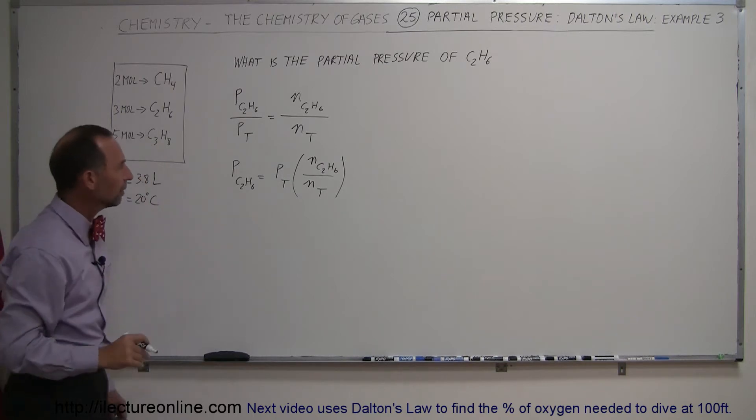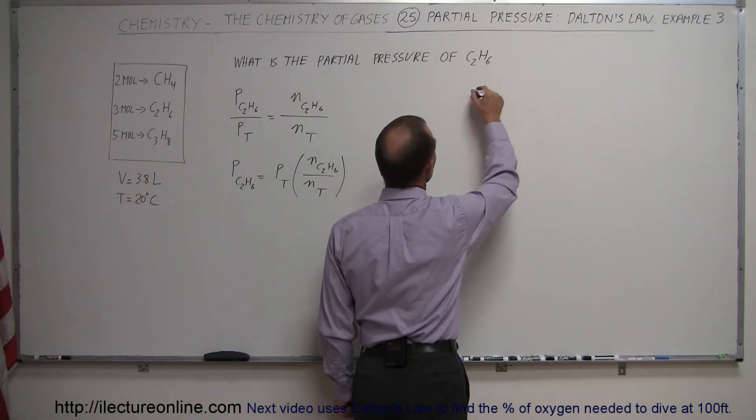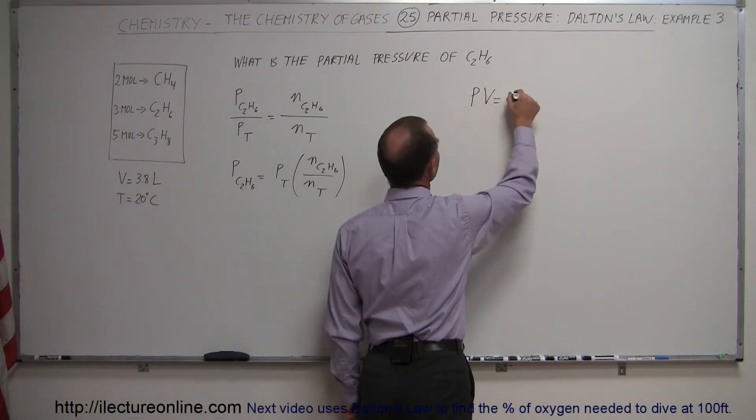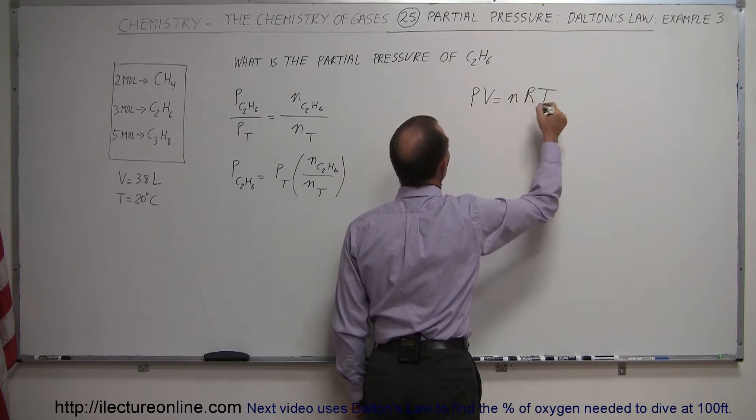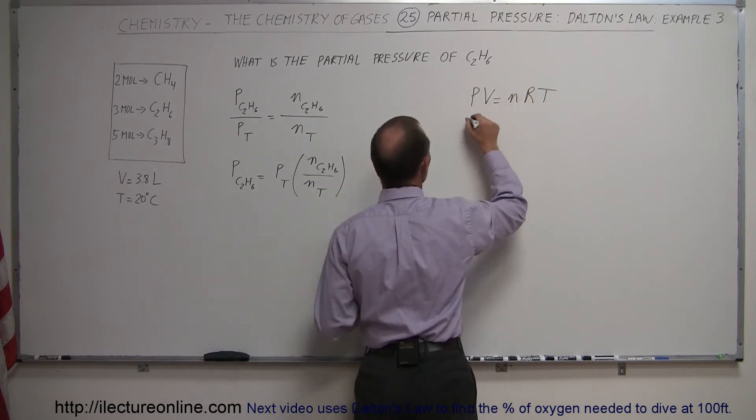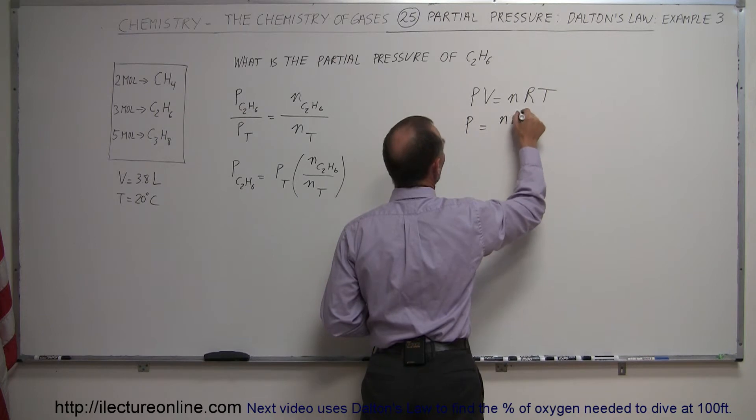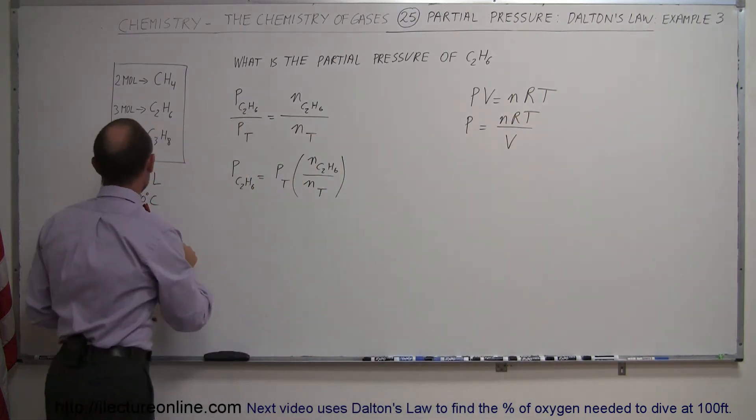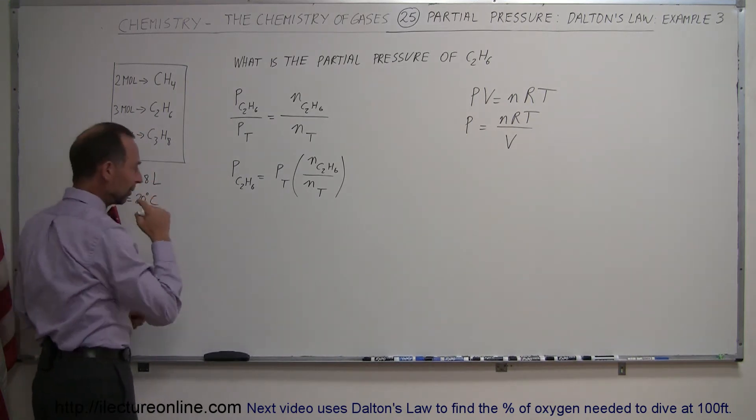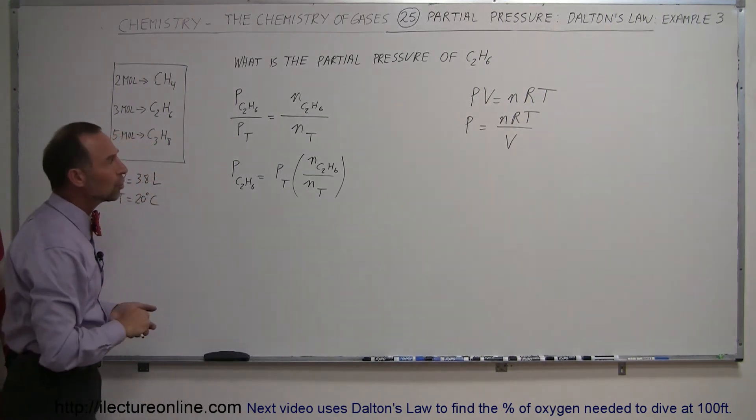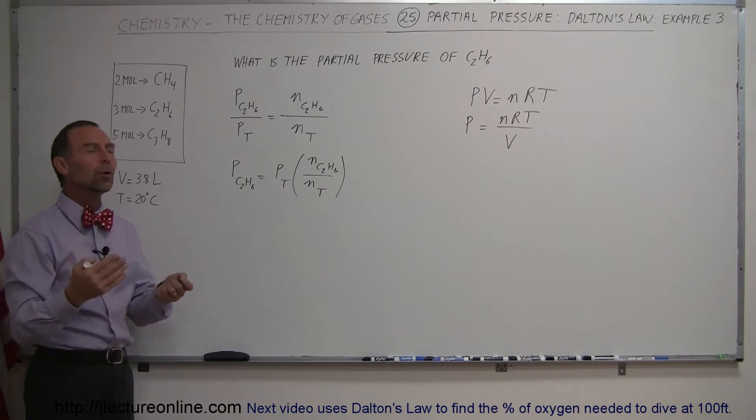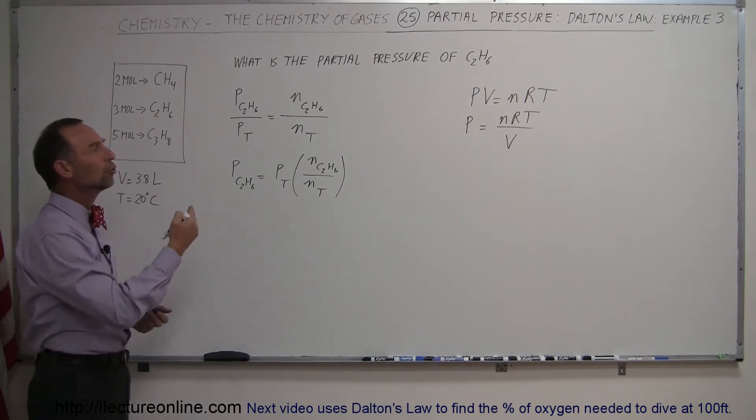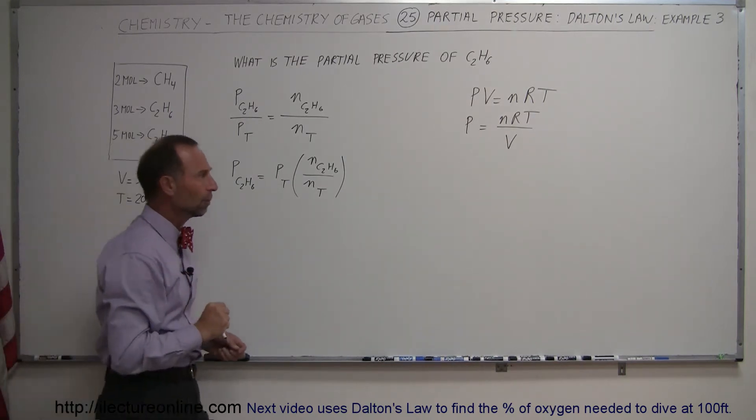We can do that by saying PV equals nRT, so P equals nRT divided by volume. Now since the volume was given to us in liters, we may not want to use the standard units, although let me do it both ways. We can use standard units and then we can use units that are often used in chemistry.